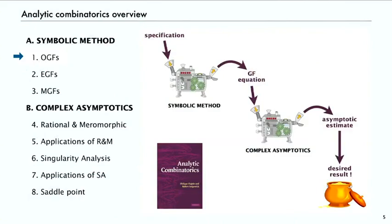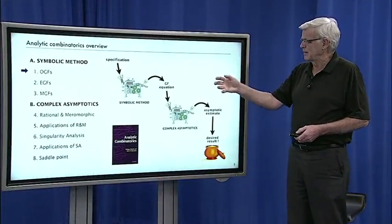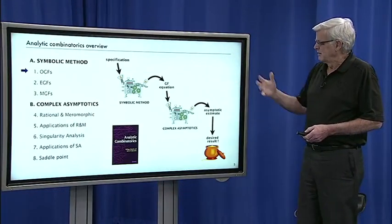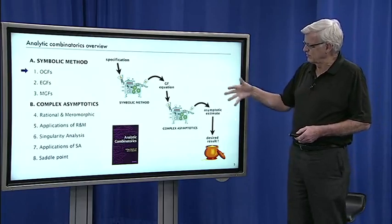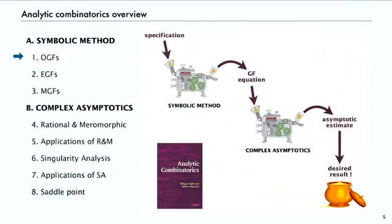The idea is that we have a specification. We start with a specification. The symbolic method is a process that gives us a generating function equation. Then complex asymptotics gives us another set of processes that immediately give us the asymptotic estimates that are the desired result.